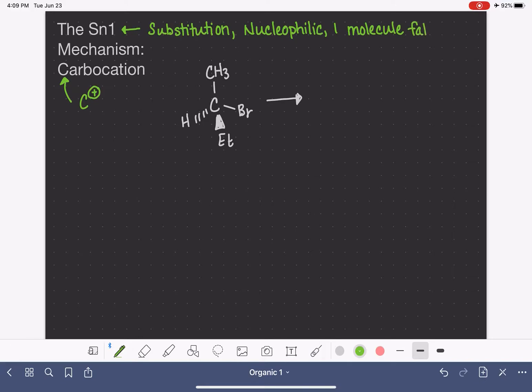In the first step of the SN1 reaction, we have one molecule falling apart. The leaving group spontaneously comes off of the molecule, and it leaves us with the carbocation.